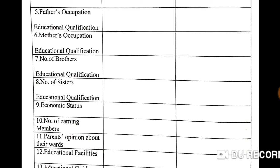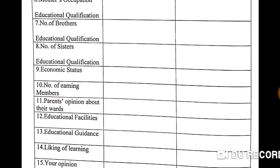We have to write the educational qualification of both brothers and sisters. If we know the educational qualification of the parents, we can understand what kind of environment they have at home. On the ninth row, we have to write the economic status, because the financial condition of the family can affect the study of the student. Rich parents can provide all facilities, while poor families could not provide all facilities, so the student would not be able to pursue proper education.